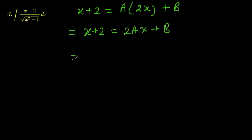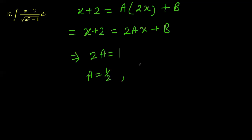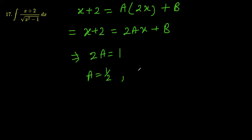This means we can equate the coefficients of x and the constant terms. So we get 2a equals 1, meaning a equals 1 over 2. The constant term on the left is 2 and on the right is b, so b equals 2.